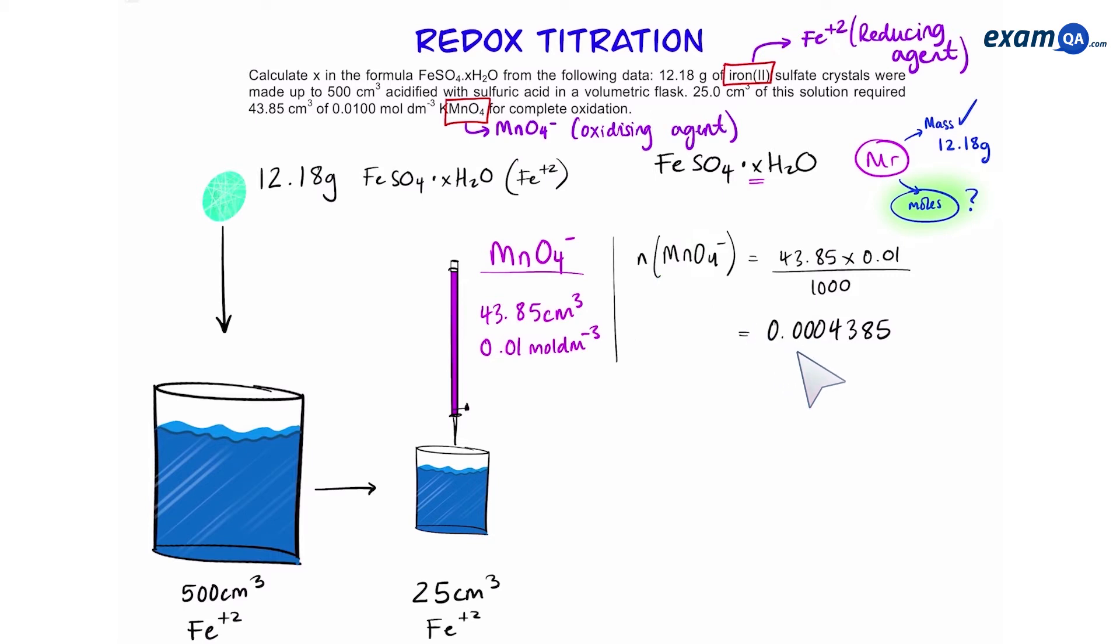Now that we have moles of manganate, we can use our overall equation for manganate and iron 2+, that the ratio is 1 to 5. Now remember, I explained how to create this overall equation in the first introductory video on redox titrations. Times the moles of manganate by 5 to give you the moles of iron 2+.